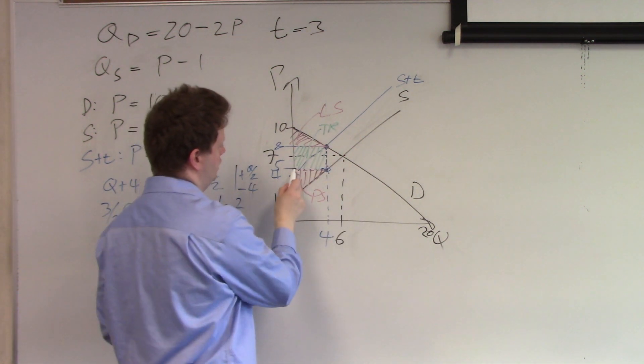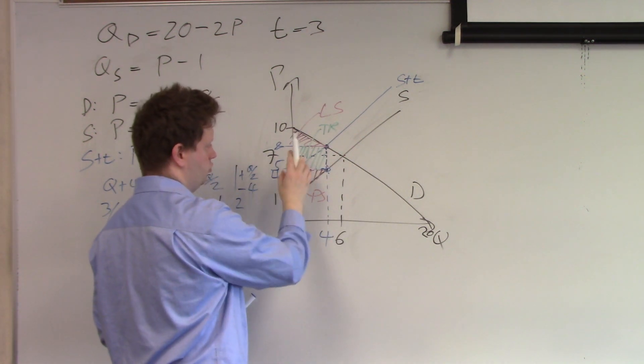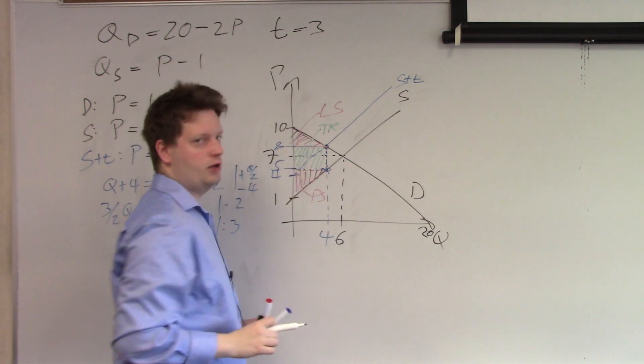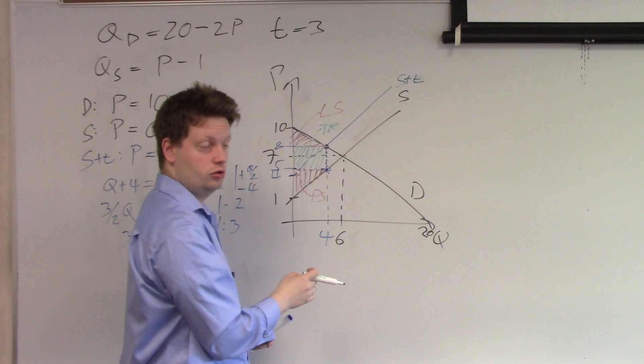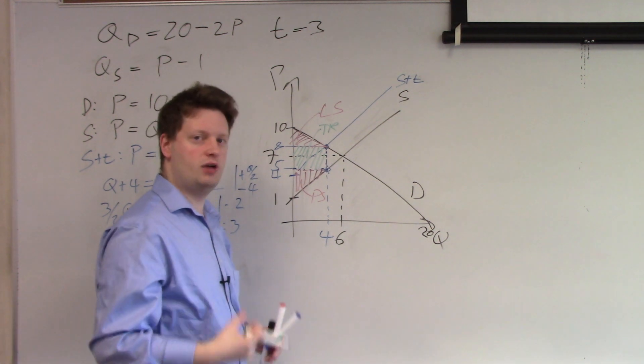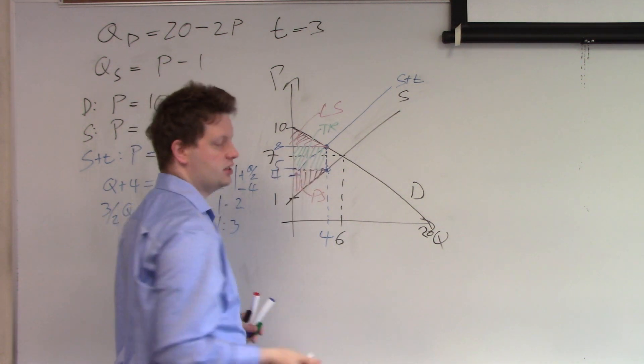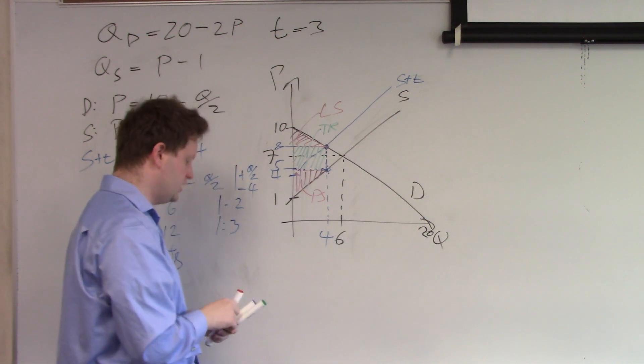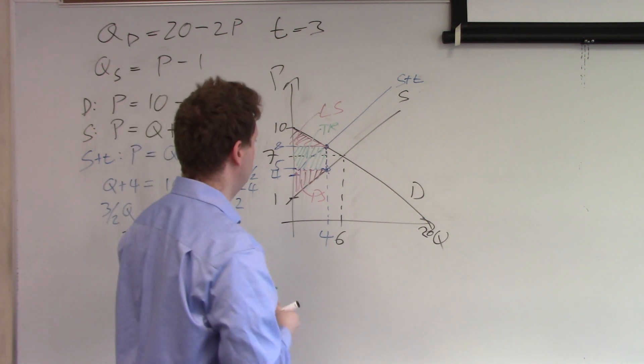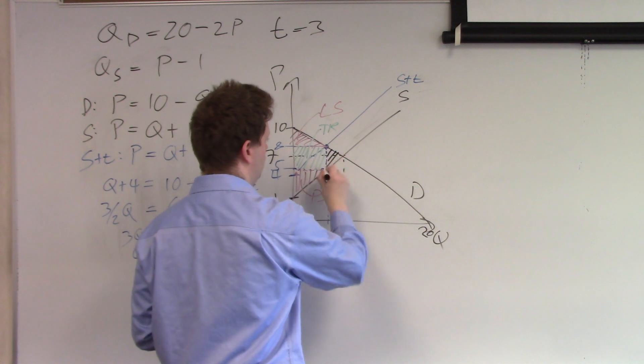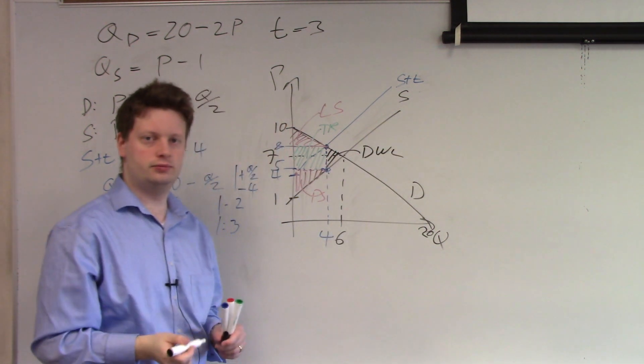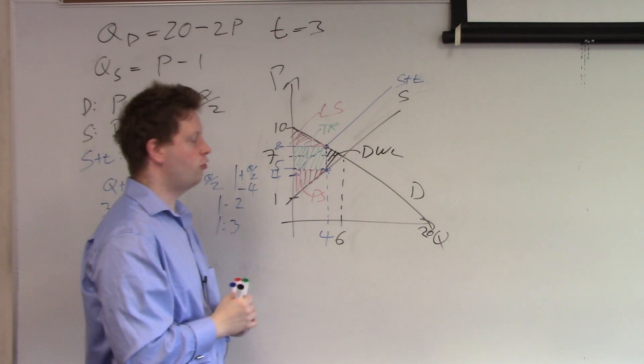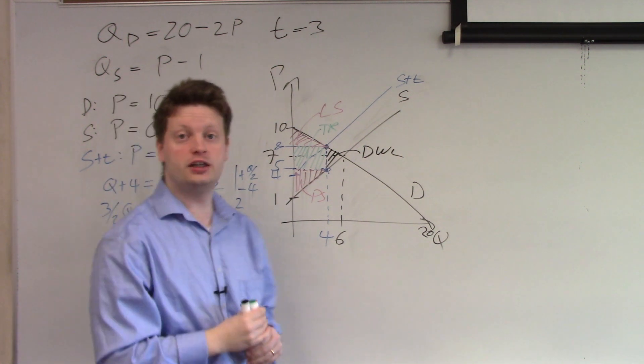And we can clearly see that the tax, the wedge in between is 3, the amount of tax, times the quantity consumed. So for each unit we get a certain amount and we can calculate this area too. The last area is this little triangle here, which is the deadweight loss. So I have four areas to calculate.